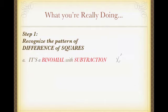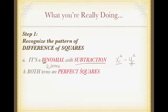So it's a binomial with subtraction. The general form is x squared minus y squared. To be a binomial, it has to just have two terms. So this has two terms. It has the x squared term and the y squared. And then of course, there is subtraction. Also both terms must be perfect squares. In this case, they are x squared, y squared.